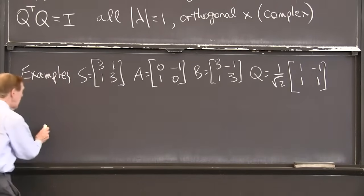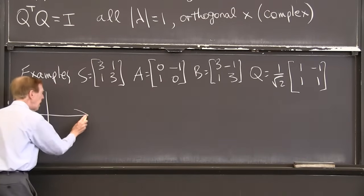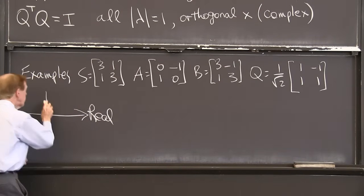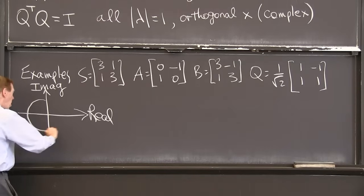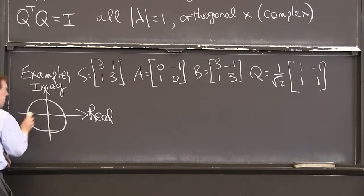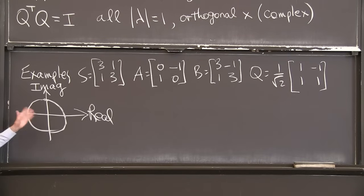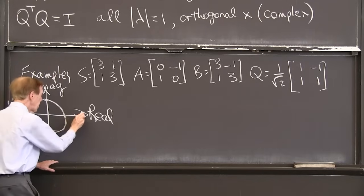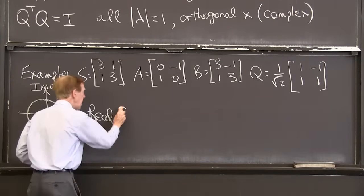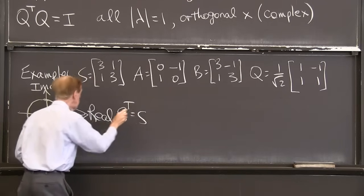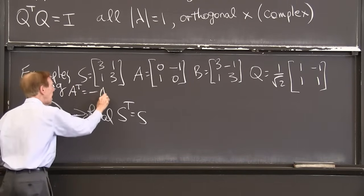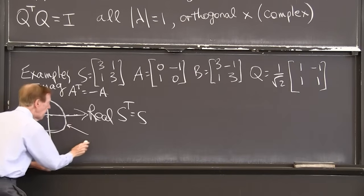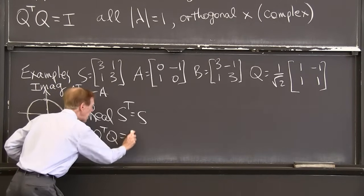Let me draw a little picture of the complex plane. There is the real axis. Here is the imaginary axis. And here's the unit circle. Eigenvalues are on the real axis when S transpose equals S.